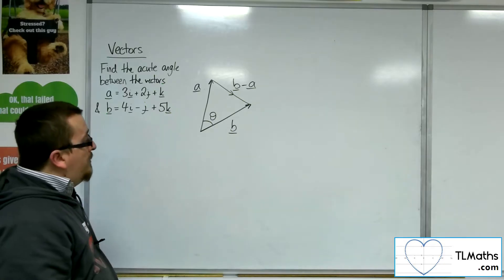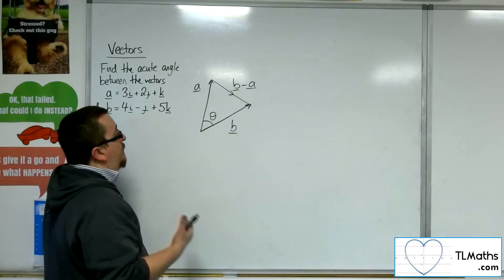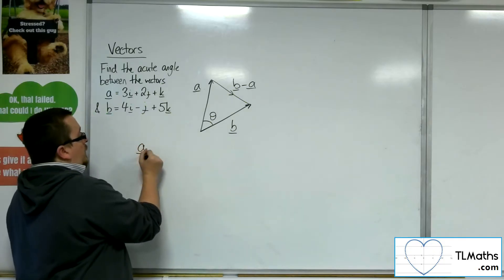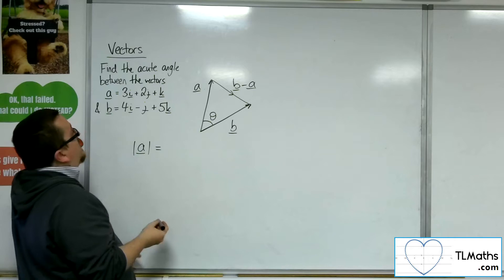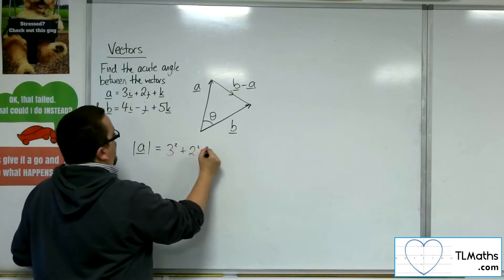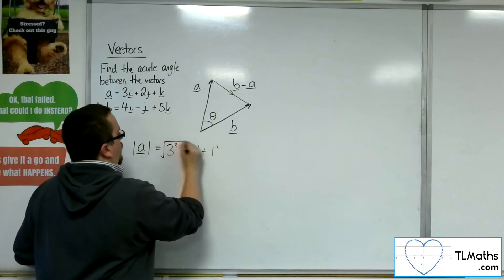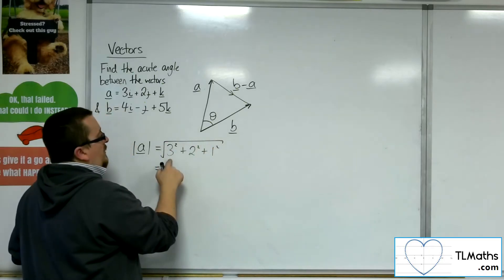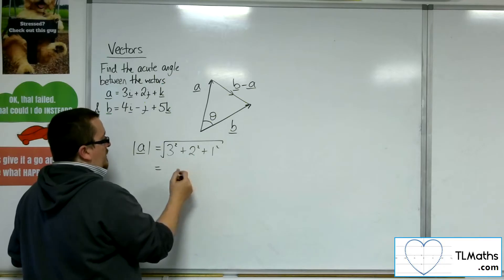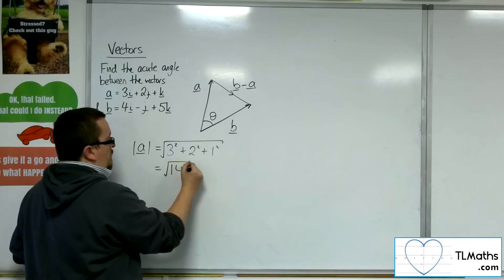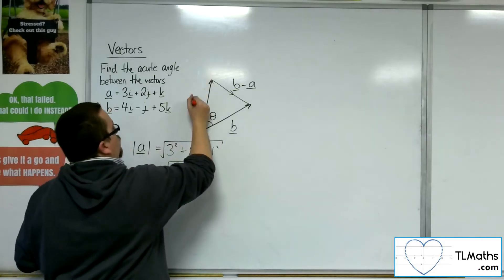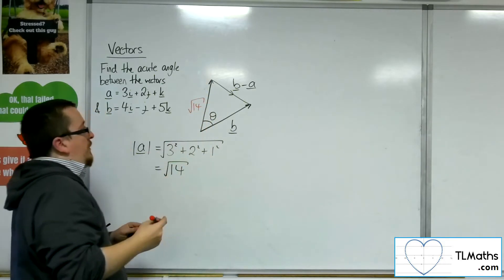So in order to do that, I've got to find the lengths of this triangle, the length of the sides. So the length of the vector A is going to be 3 squared plus 2 squared plus 1 squared square rooted. So that's 9 plus 4 plus 1, so that would be 14 square rooted. So what I can do is I can write that in as root 14 for that side.